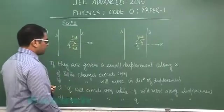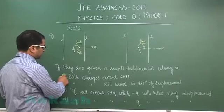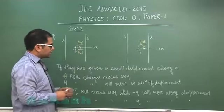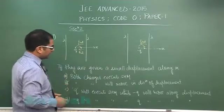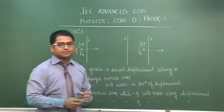So quite obviously both the charges execute SHM would be incorrect because one is stable equilibrium, other is unstable. Both the charges will move in direction of displacement, that is incorrect. q will execute SHM, minus q will move along the displacement, that is correct.